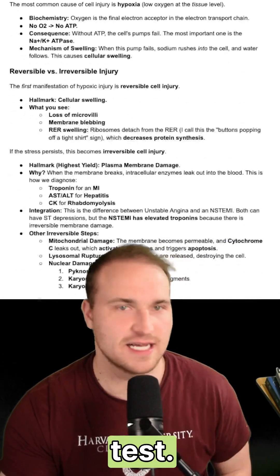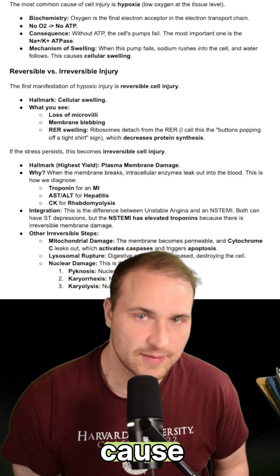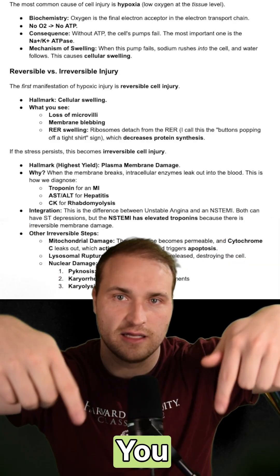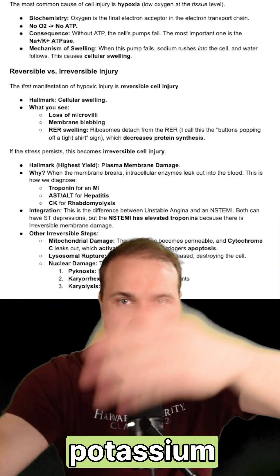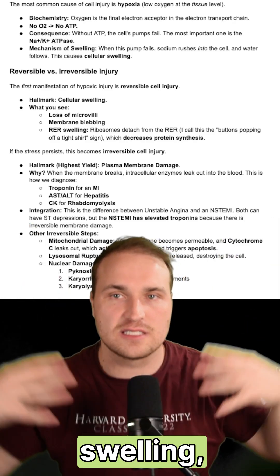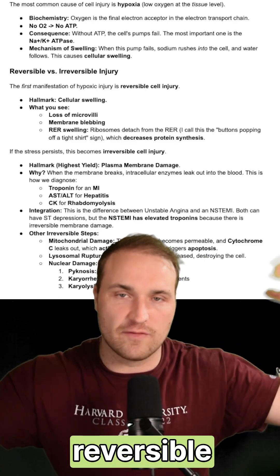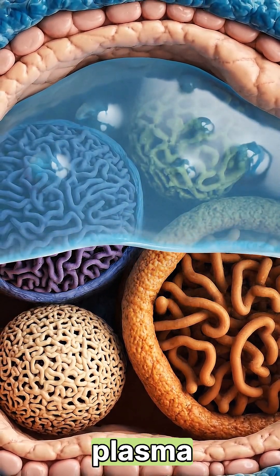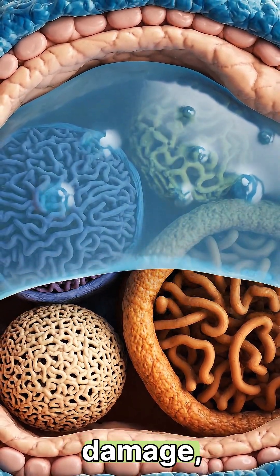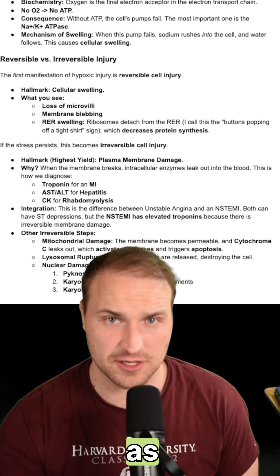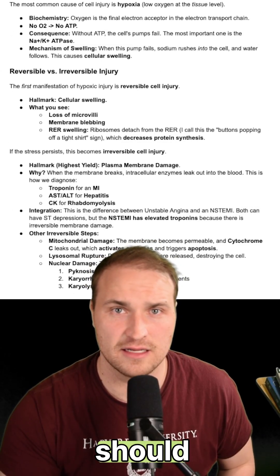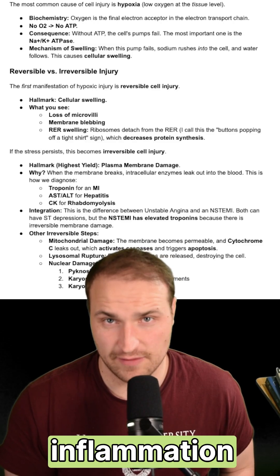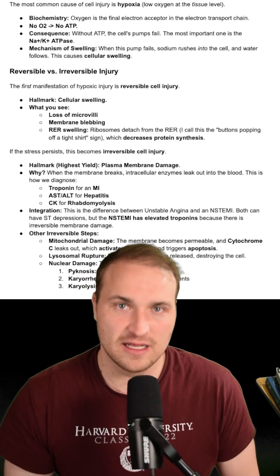Cell injury and death is huge on this test. The most common cause is hypoxia, which leads to less ATP. You get sodium-potassium pump failure, and that causes cell swelling, which is a reversible injury. Irreversible injury is defined by plasma membrane damage, and nuclear changes occur as well. You should know necrosis is messy, it's related to inflammation, and it's always pathological.